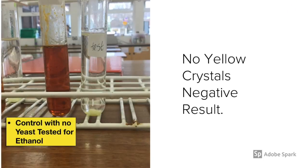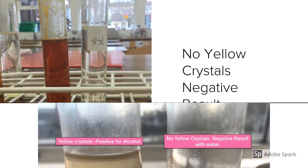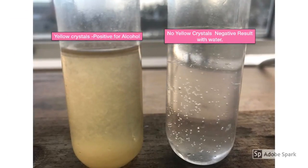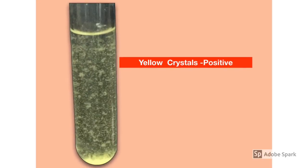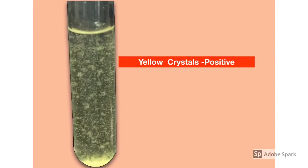In the control there were no yellow crystals produced, so this is a negative result for ethanol. We also conducted the same test using a sample of water, and you can see here on the right that no yellow crystals were produced. The formation of yellow crystals indicates a positive result for ethanol, and this was only achieved in the flask that had contained the yeast cells.